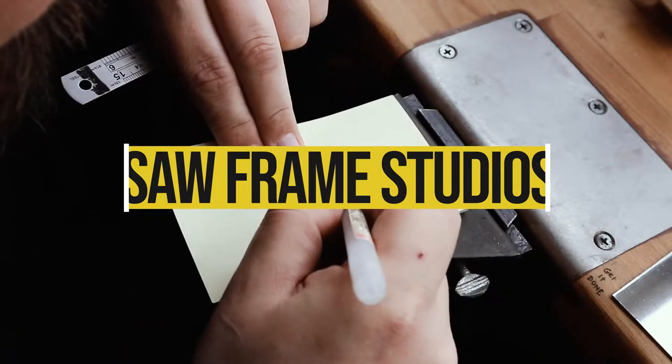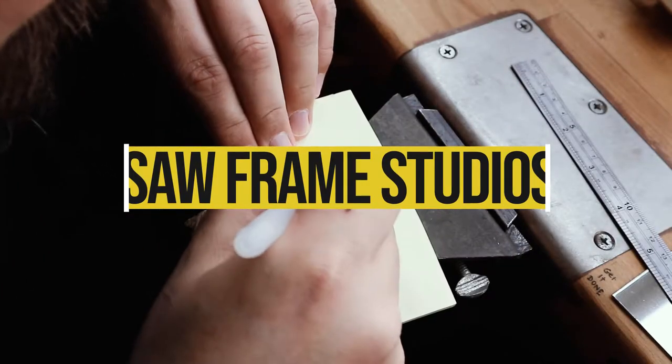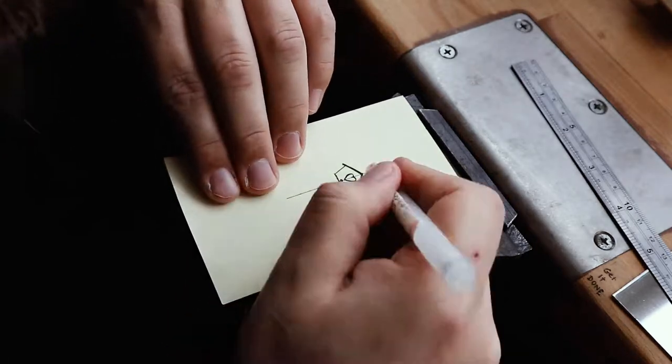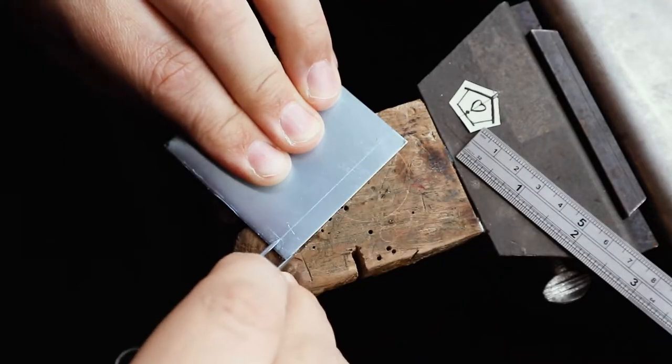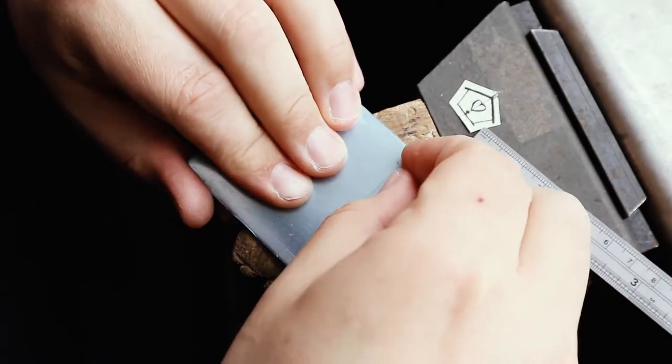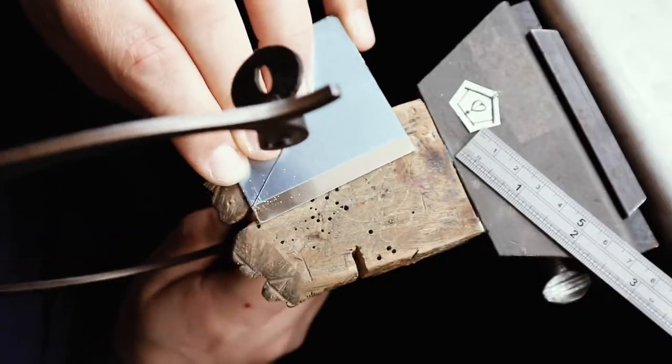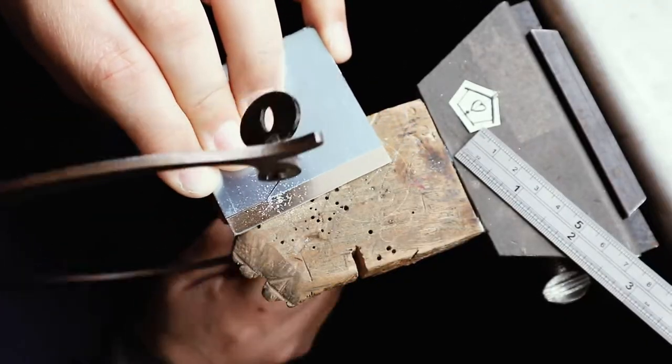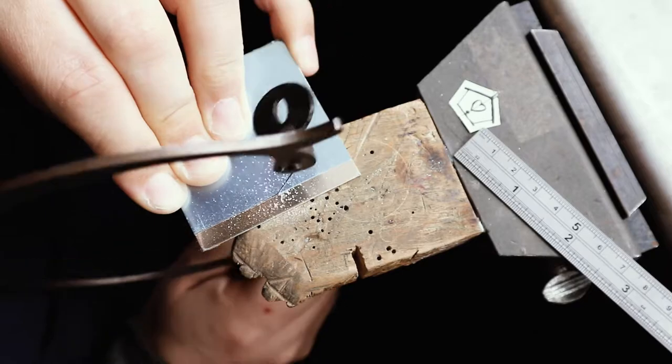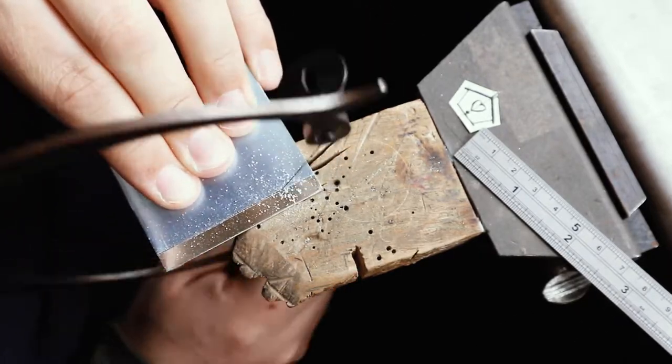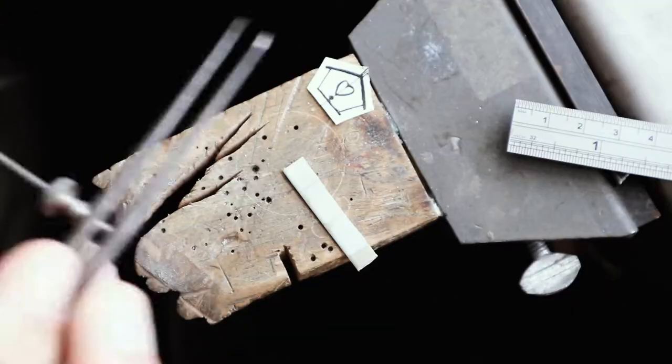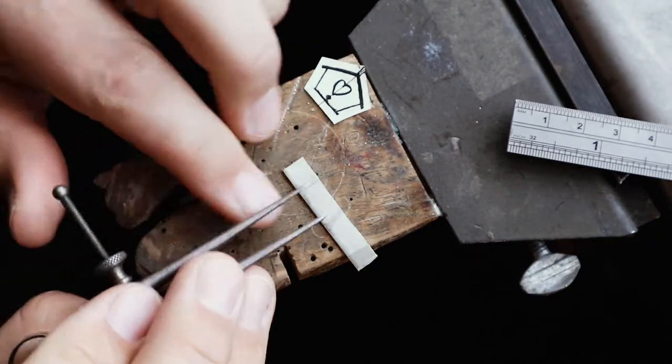Hello and welcome again to another SoftFrame Studios video. Today I am going to make a little birdhouse pendant in sterling silver. If you're new to the channel, maybe consider subscribing, and if you have any questions, drop them down below in the comment section and I'll get back to you as soon as possible.